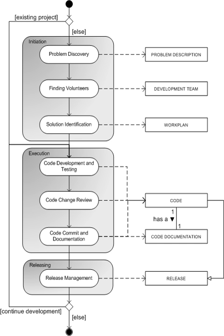Distributions are another type of open-source project — collections of software published from the same source with a common purpose. The most prominent example of a distribution is an operating system. There are many Linux distributions such as Debian, FedoraCore, Mandriva, Slackware, Ubuntu, etc., which ship the Linux kernel along with many user-land components. There are other distributions like ActivePearl, the Perl programming language for various operating systems, and SIGWIN distributions of open-source programs for Microsoft Windows.